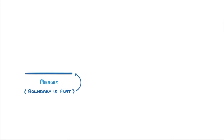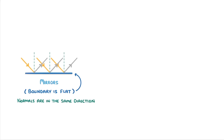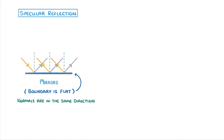The last thing we need to look at are the different types of reflection. Some materials, like mirrors, are perfectly smooth, and so the boundary is completely flat. This means that all the normals are in exactly the same direction, and so all of the incoming light rays will be reflected in the same direction. We call this specular reflection, and it gives us a nice clear image, like you would get if you looked in the mirror.